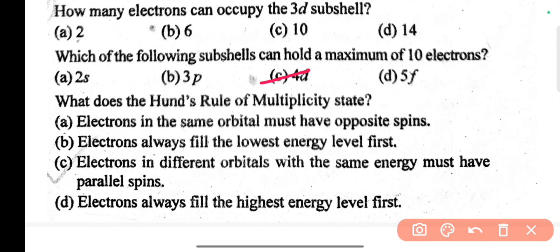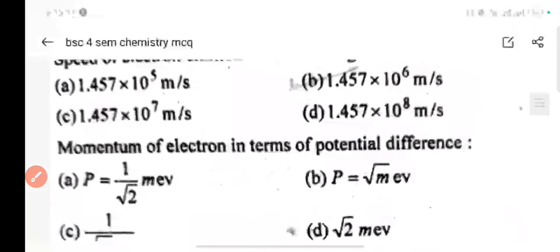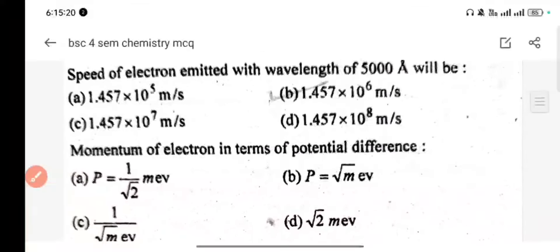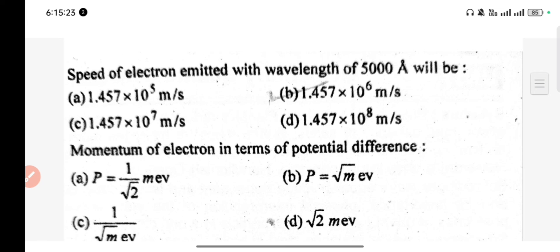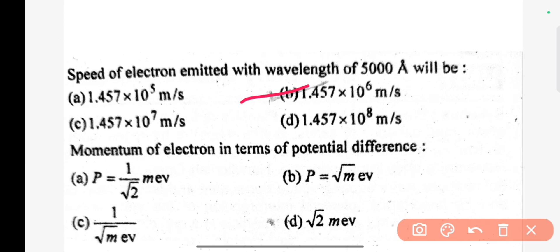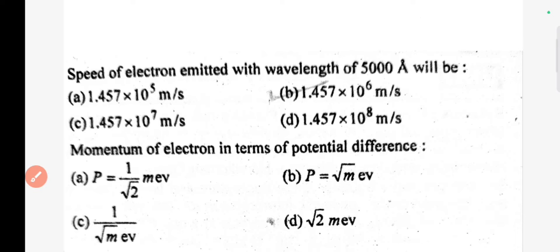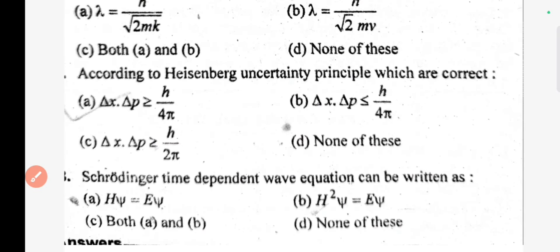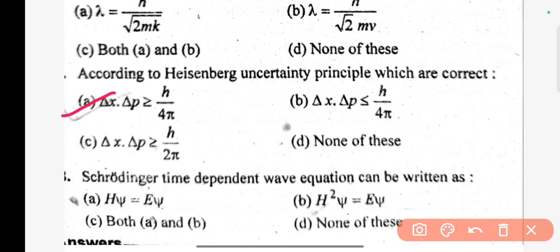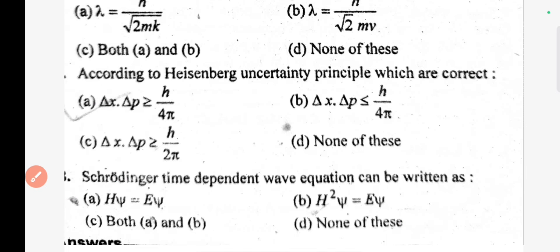Which subshell can hold a maximum of 10 electrons? The correct answer is C. What does Hund's rule of maximum multiplicity state? The correct answer is C. What is the speed of an electron emitted with a wavelength of 5000 Angstroms? The correct answer is B. What is the momentum of an electron in terms of potential difference? The correct answer is D. According to the Heisenberg uncertainty principle, which statement is correct? The correct answer is A.